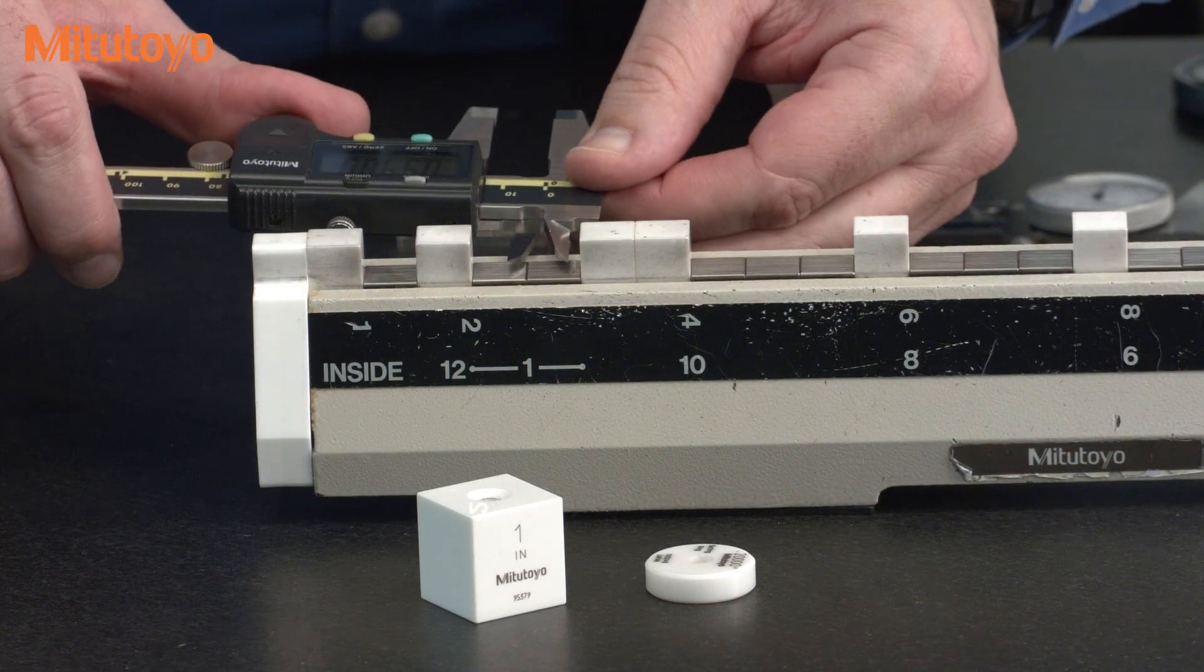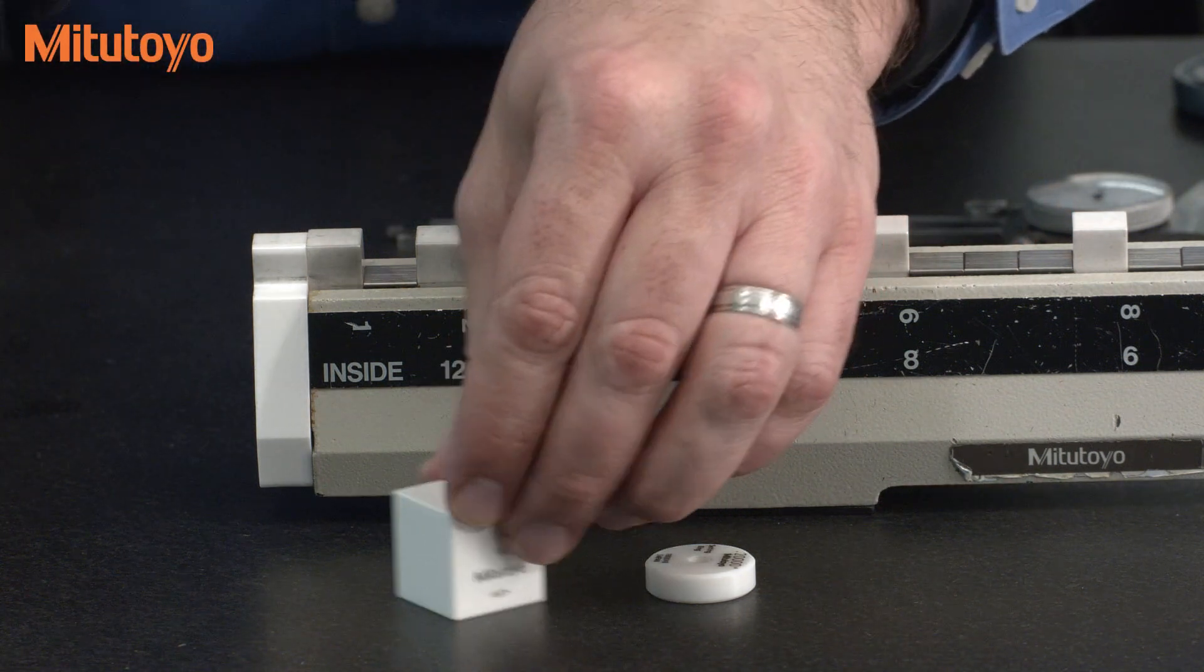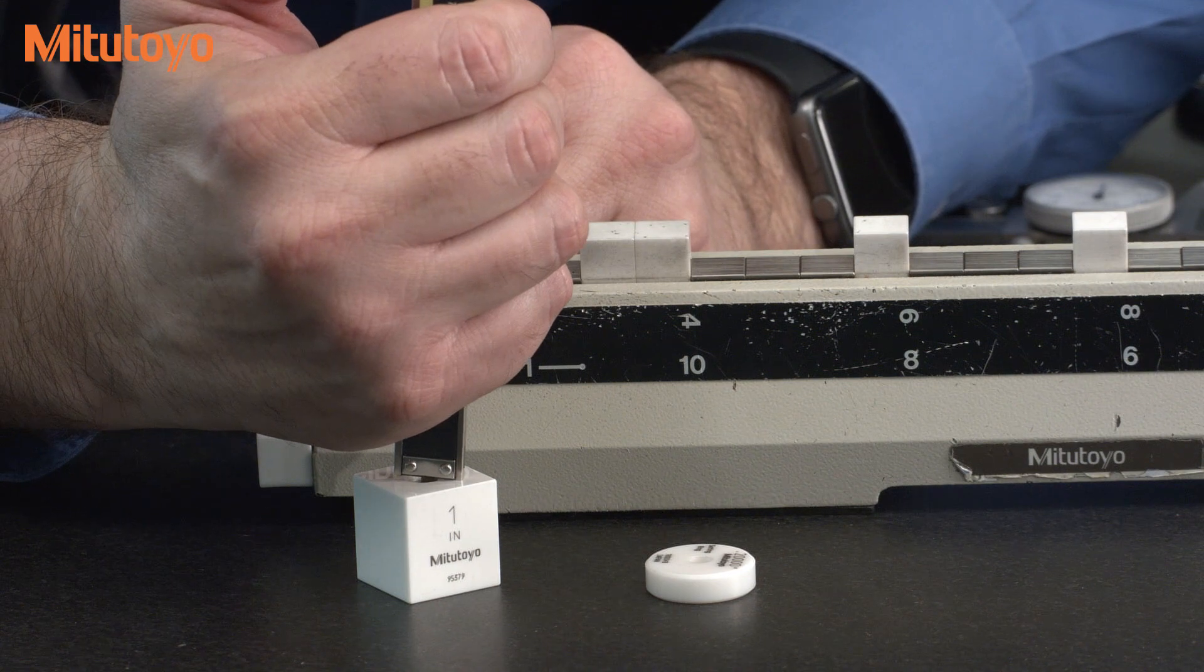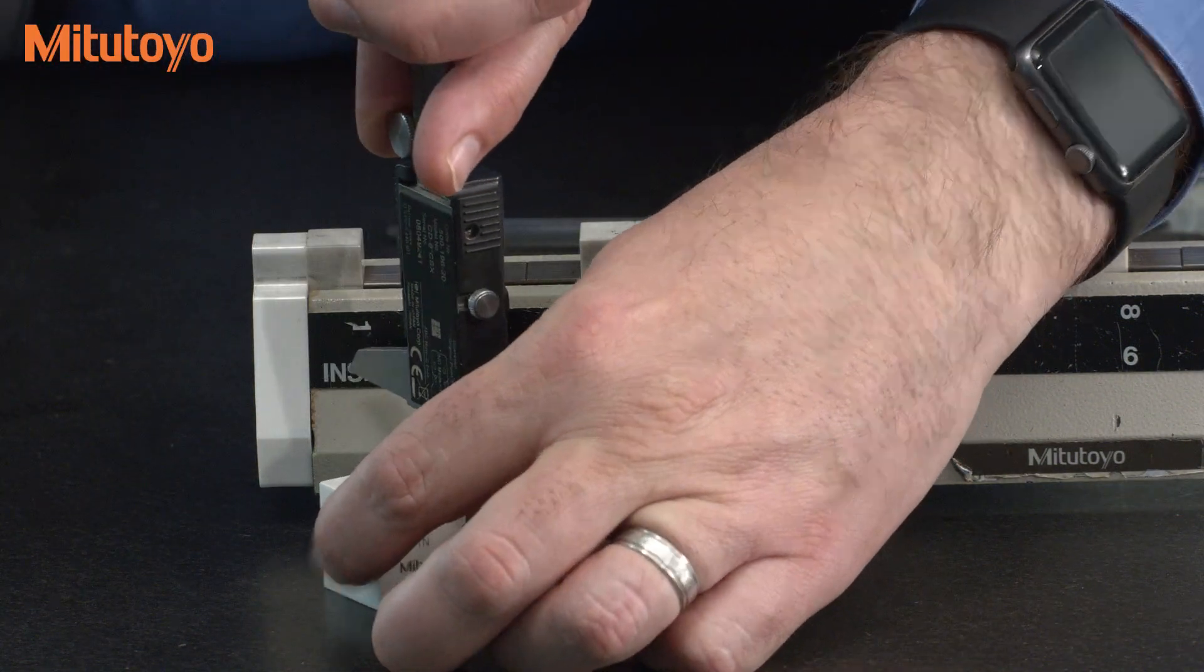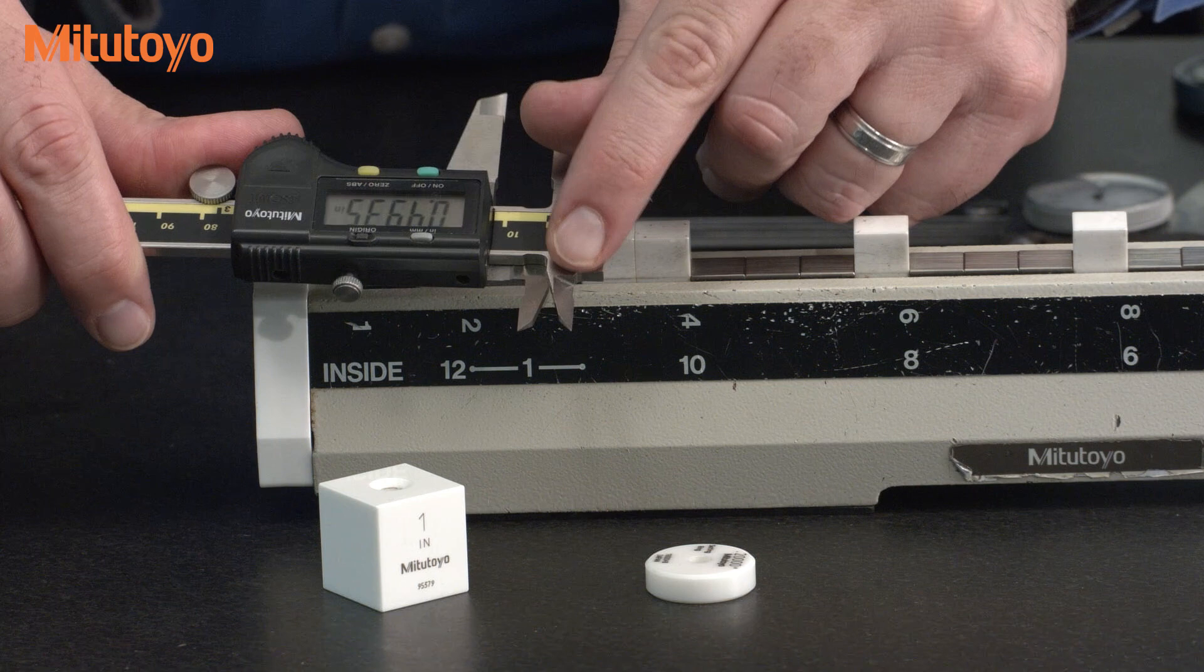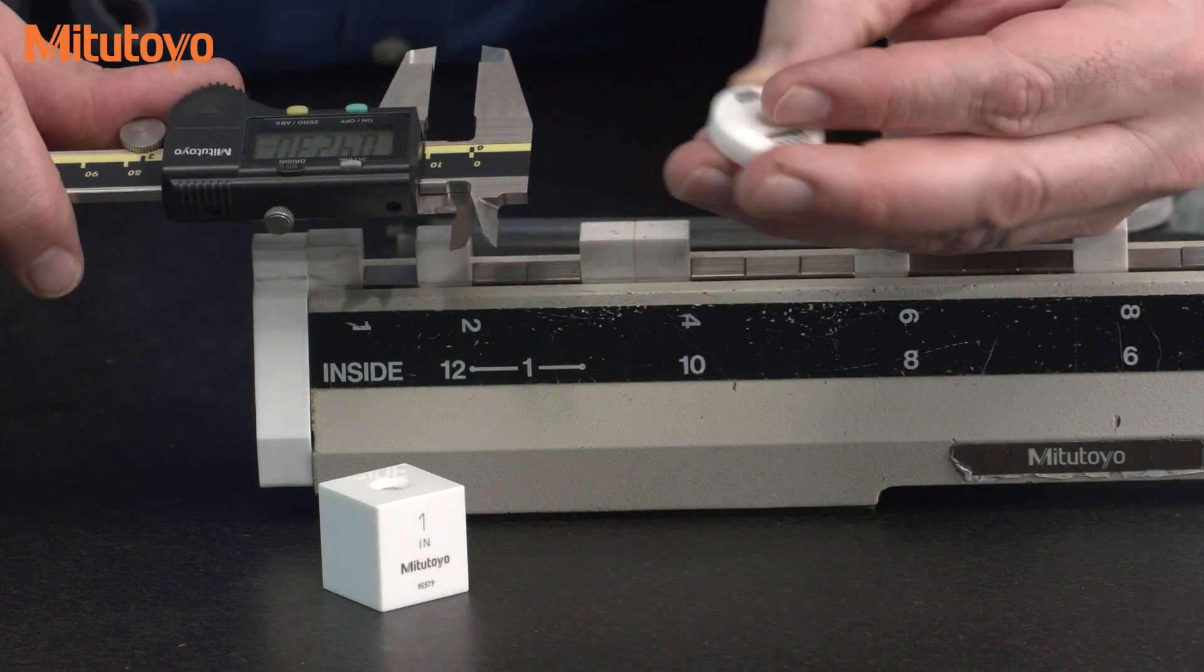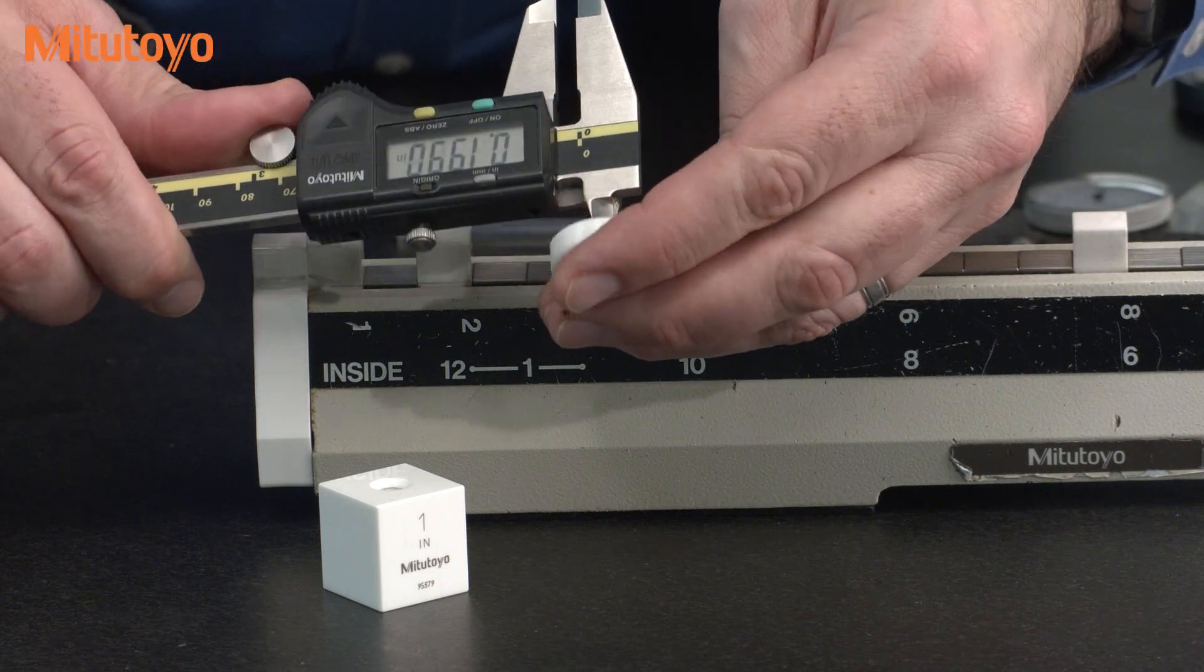Then we do an inside measurement, one inch like this. Then for the depth bar, we do a measurement like that. This caliper has a step function, so we do a measurement like that. And then to make sure that we don't have any problems with the small inside knife edges, we measure a two hundred thousandths ring gauge like that.